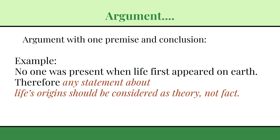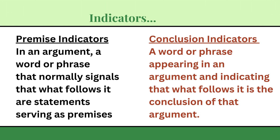Now, how can we identify premises and conclusions? For that, there are indicators given in the text. Since an argument has two things — premises and conclusion — we have premise indicators and conclusion indicators. A premise indicator is a word or phrase that signals that what follows it are statements serving as the premise. A conclusion indicator is a word or phrase indicating that what follows it is the conclusion of the argument.